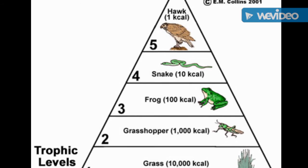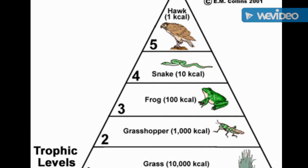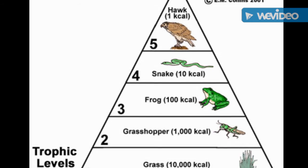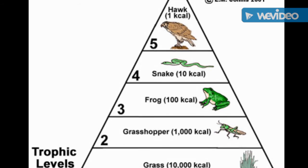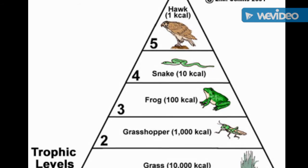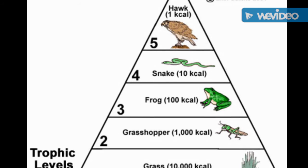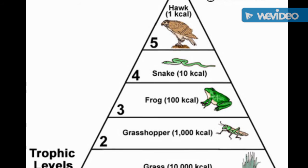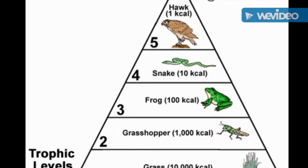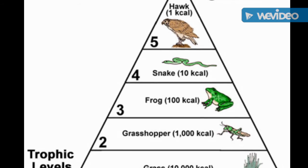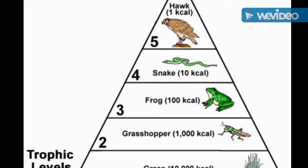And then you have your tertiary consumers, the head honcho of the energy pyramid. They stand uncontested, but they have the least amount of energy out of the whole pyramid, which can't sustain a large population.